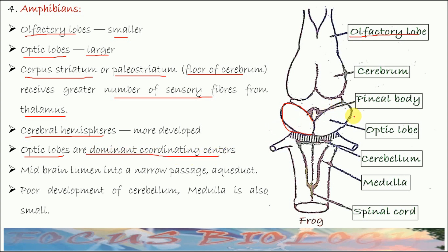Optic lobes are the dominant coordinating center in amphibians — these are two in number and are prominent coordinating centers. The midbrain has a narrow passage which is called the aqueduct. The cerebellum is poorly developed in amphibians, and the medulla is also smaller.